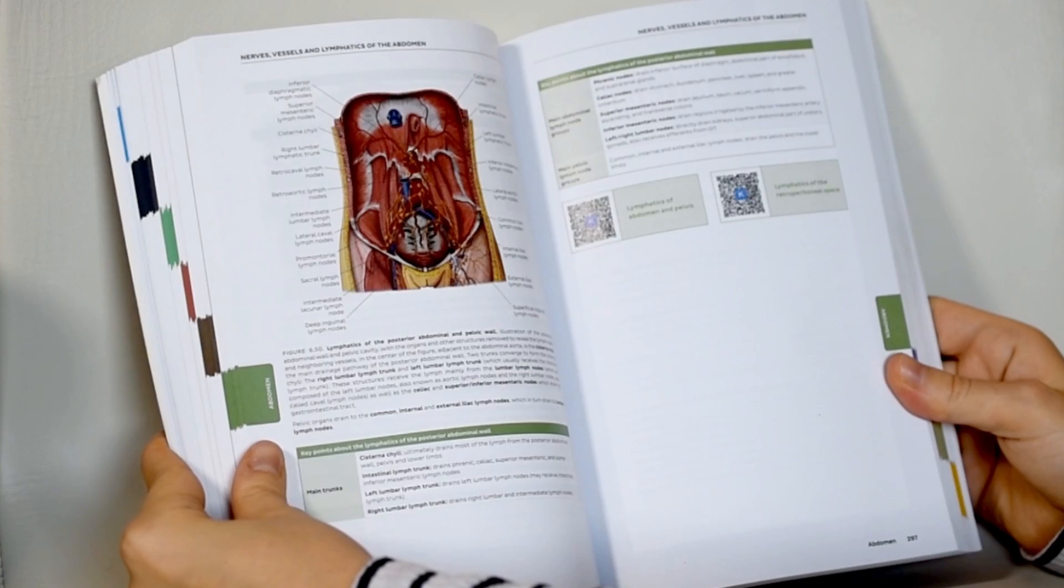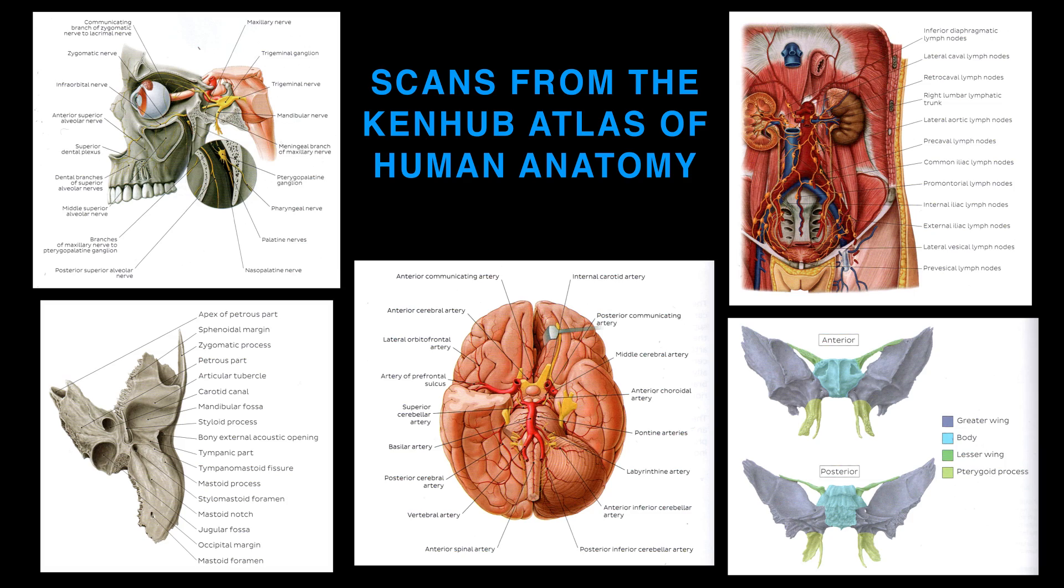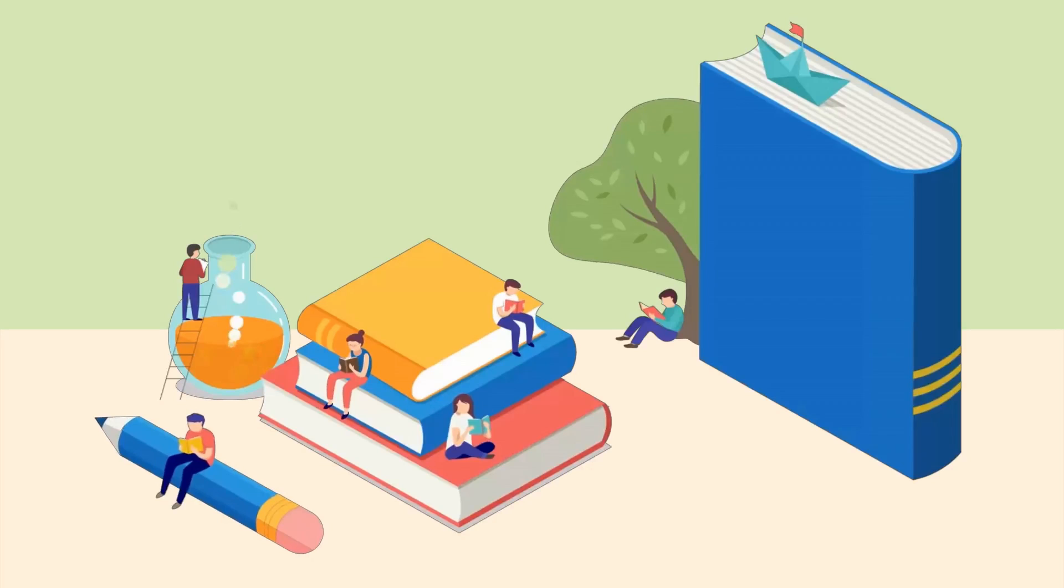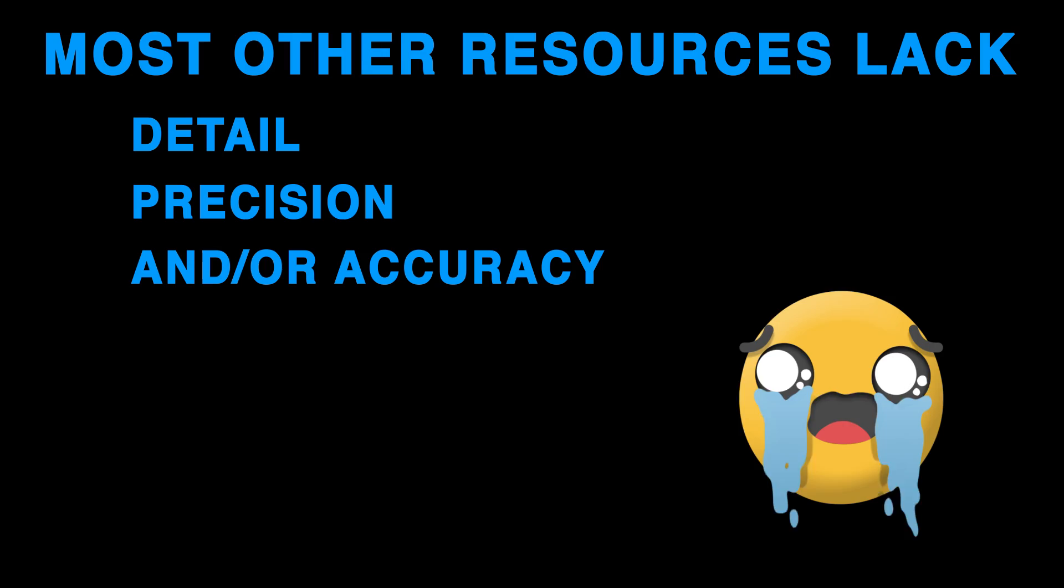Now, I'd like to go over some of the features of this amazing book. Kenhub's carefully curated illustrations are accurate, clear, and detailed. Achieving complete, in-depth understanding of anatomy often requires students to do lots of digging and cross-referencing. Most resources simply lack detail, precision, or are just plain inaccurate.